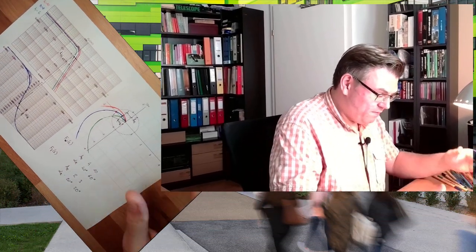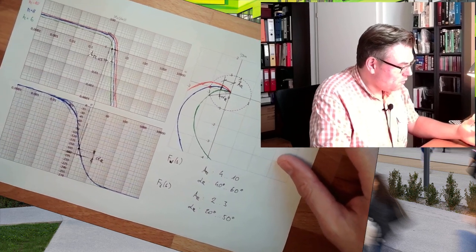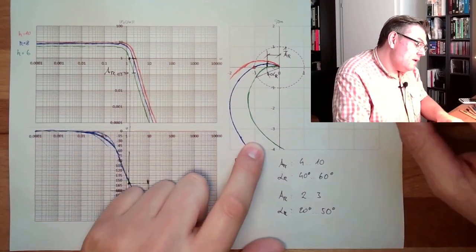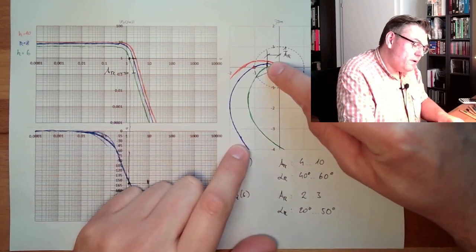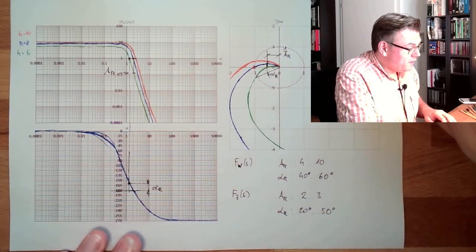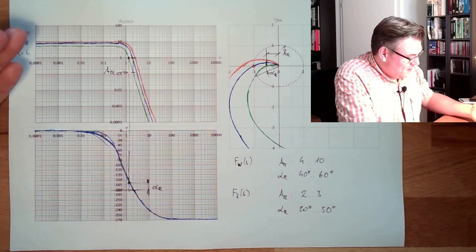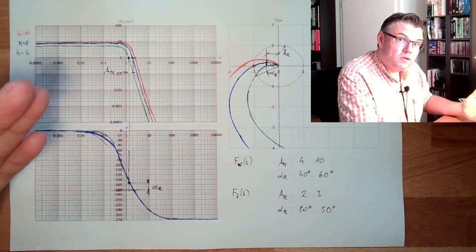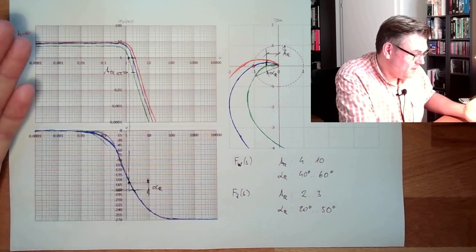Hello and welcome to a new video about contour engineering. We know a lot about stability and will now make use of the Nyquist criteria. From last time, we saw that there is a phase reserve and an amplitude reserve, and we have to maintain a certain distance to the Nyquist point. But what is good and what is not good — what are the goals?